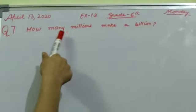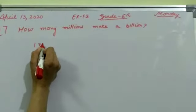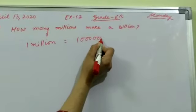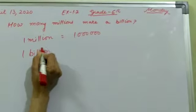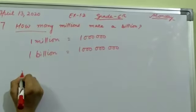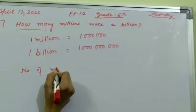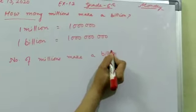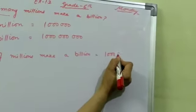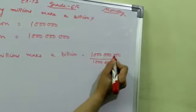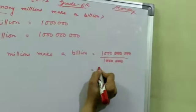Question number 7: how many millions make a billion? One million equals six zeros with one. One billion equals nine zeros. Cut the zeros — three zeros, then again three zeros. The answer is one thousand.